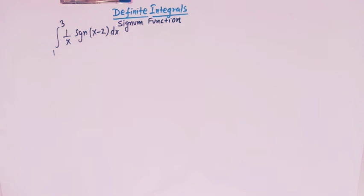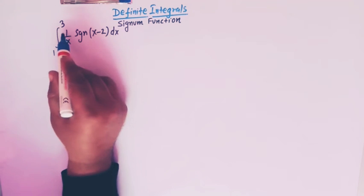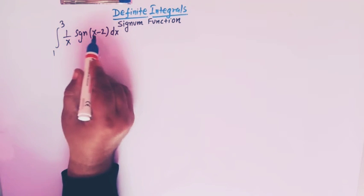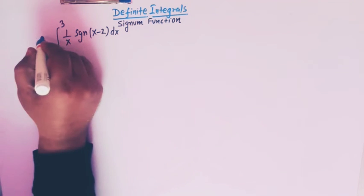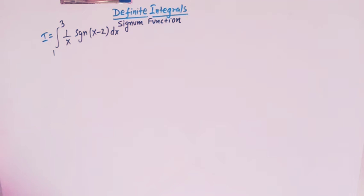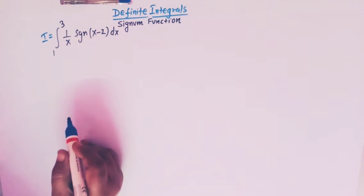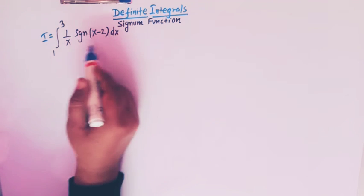Hello viewers, in today's class we are going to take up one important conceptual problem from definite integrals. Here we have to integrate the function 1 over x times signum of x minus 2, from 1 to 3. Let us start — before proceeding further, let us take a close look at our integrand.